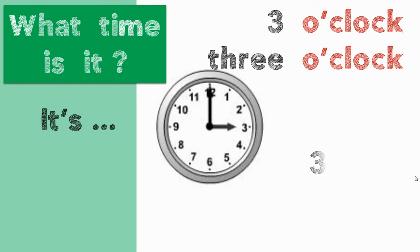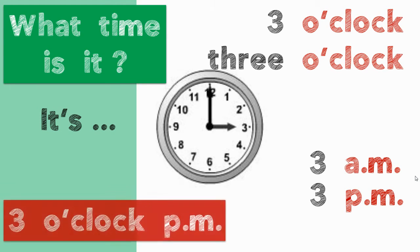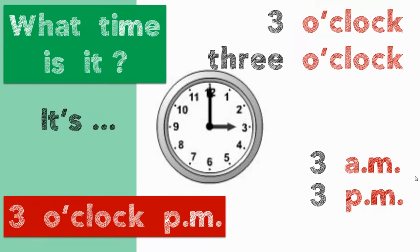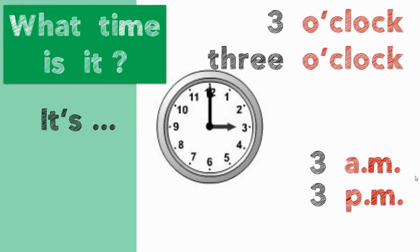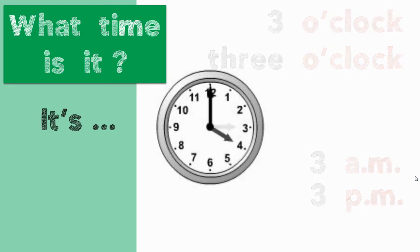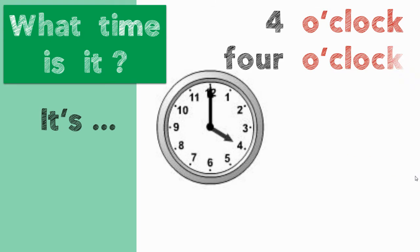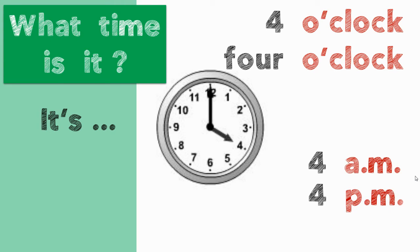It's 3 o'clock. It's 3 a.m. or 3 p.m. Can we say 'it's 3 o'clock p.m.'? No, that's a mistake. It's 3 o'clock, or it's 3 a.m., or 3 p.m. What time is it? It's 4 o'clock. It's 4 a.m. or 4 p.m.